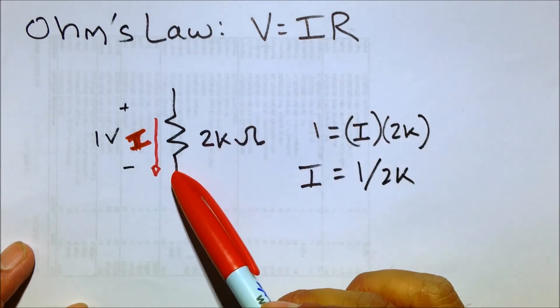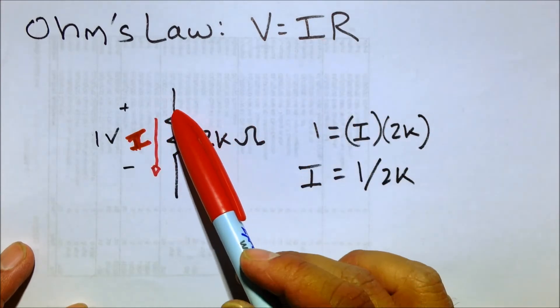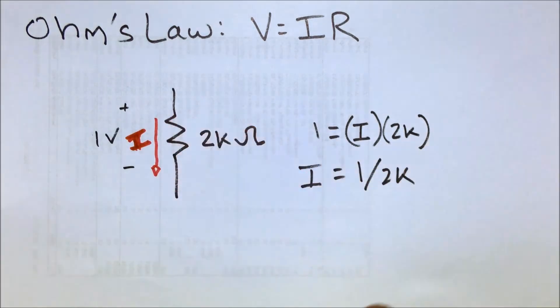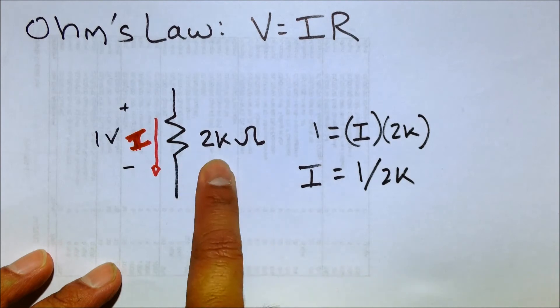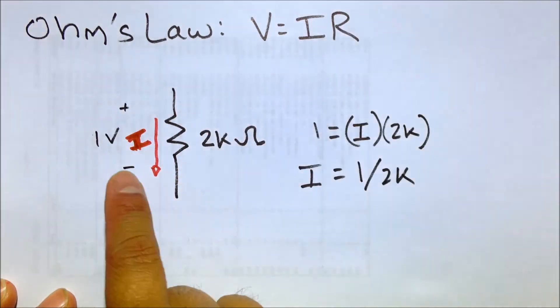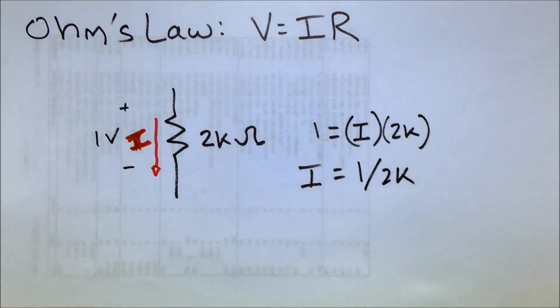So let's say we're looking at a resistor, and just imagine that this is part of a circuit, and we're just isolating the resistor. We're taking a look at the resistor, and we know it's a 2 kilo-ohm resistor, and we know that the voltage drop across this resistor is 1 volt through some measurement, or if it's a practice problem you're working on, you might see something like this.